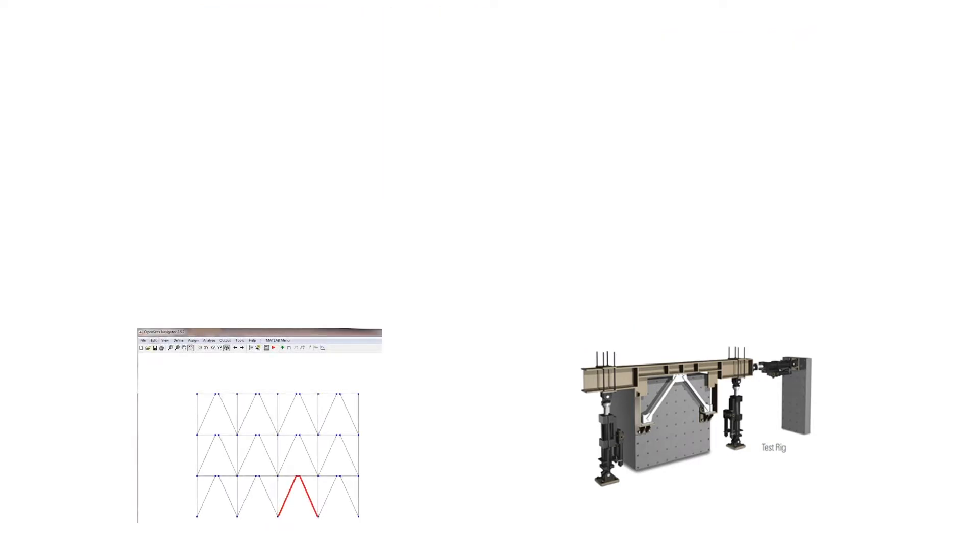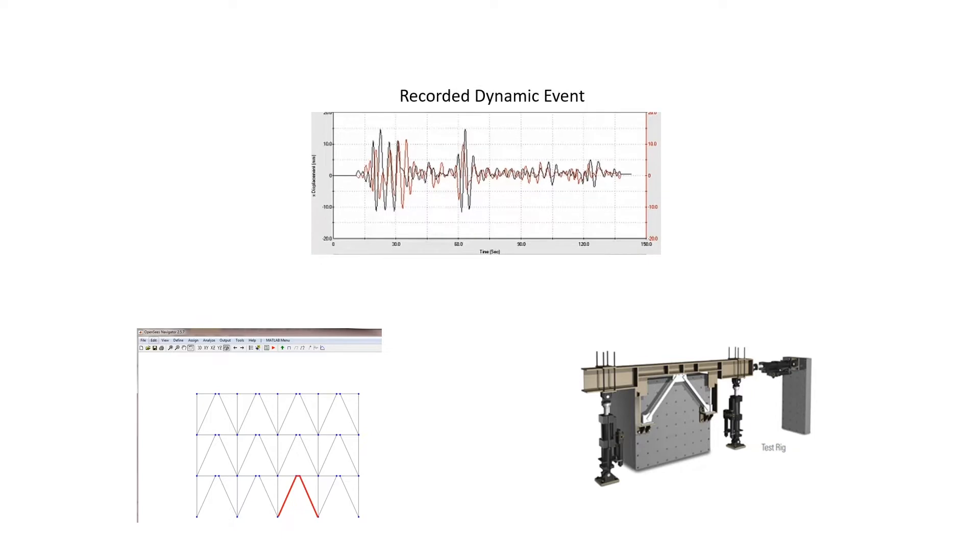In pseudodynamic hybrid simulation, a recorded dynamic event, such as an earthquake time history profile, is used as a step-by-step command waveform. In each time step, the computational substructure is first analyzed by solving the associated equations of motion. Calculated displacements at the interfaces are then imposed on the physical substructure using actuators.